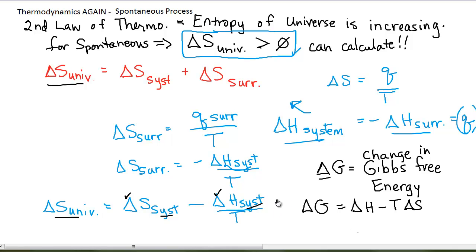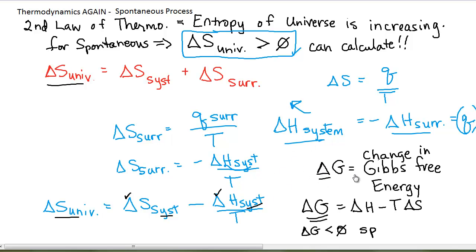What the Gibbs free energy does is allow us, in one thermodynamic parameter, to predict whether or not a process is spontaneous. Numerically speaking, if you calculate a delta G for a reaction or process and the delta G is negative — less than zero — you are looking at a spontaneous change. If the delta G is positive, then the reaction or process is not spontaneous. We'll do more with these calculations in a minute.